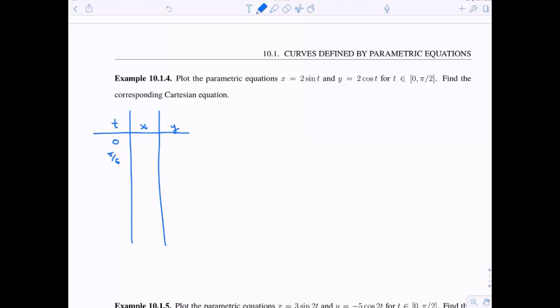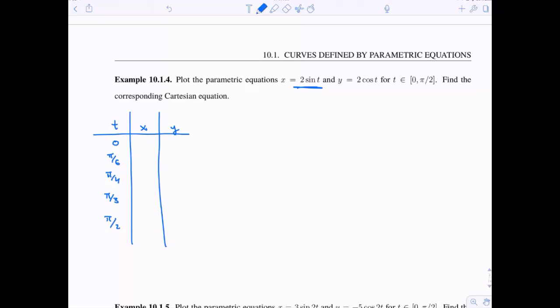Now my t ranges between 0 and pi over 2. So I'm going to do 0, I'm going to do pi over 6, pi over 4, pi over 3, and pi over 2. I'm choosing the well-known values for cosine and sine on my unit circle to plot this.